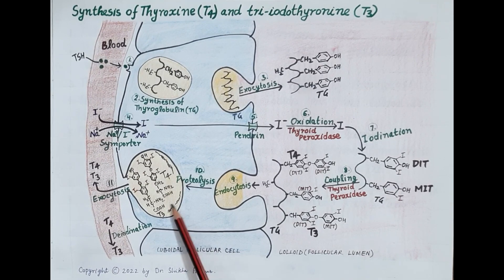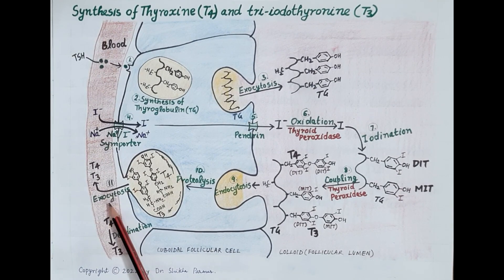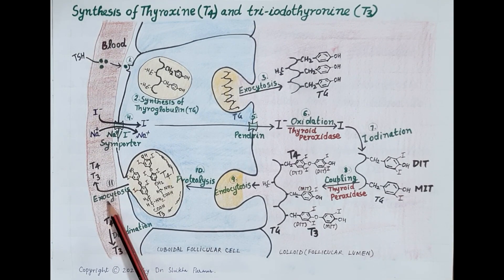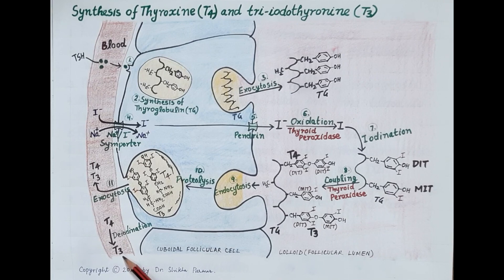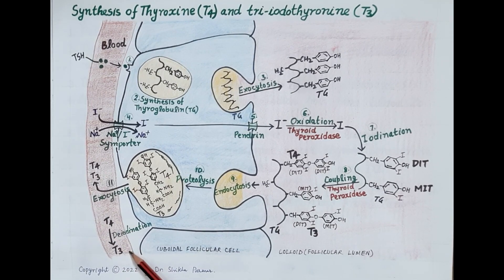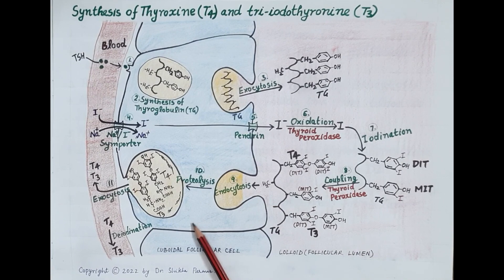T3 and T4 thus formed are finally secreted into the blood by exocytosis. T4 is inactive while T3 is active, so T4 is deiodinated to T3 — one iodine is removed from T4 to produce T3 — in organs like the liver and kidneys. This completes the process by which T3 and T4 are synthesized by the follicle and secreted into the blood.